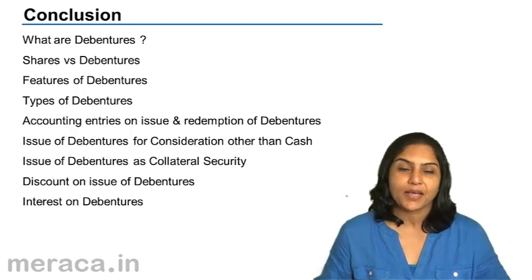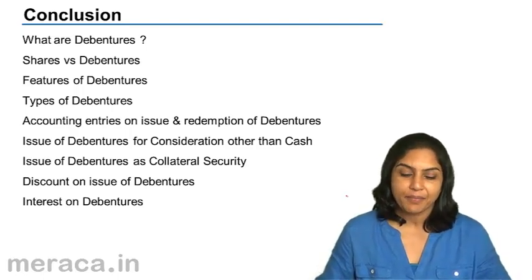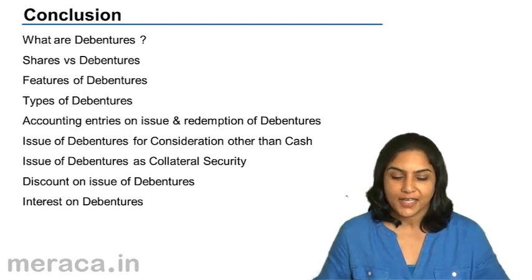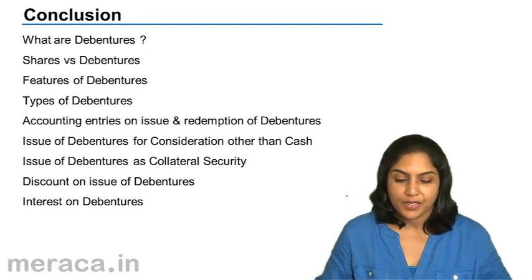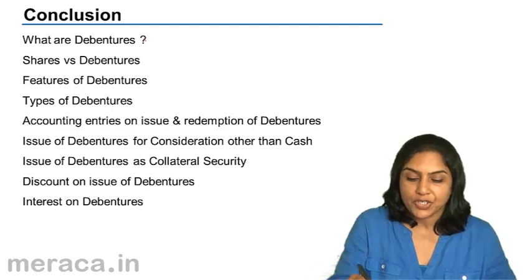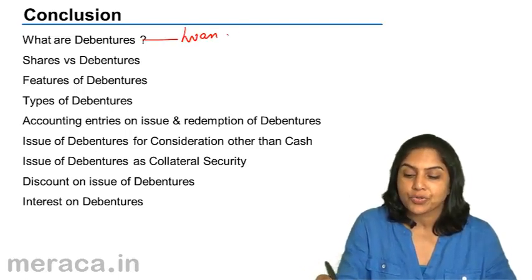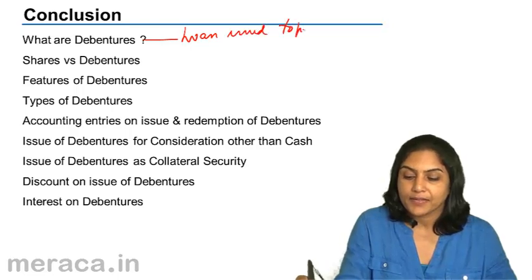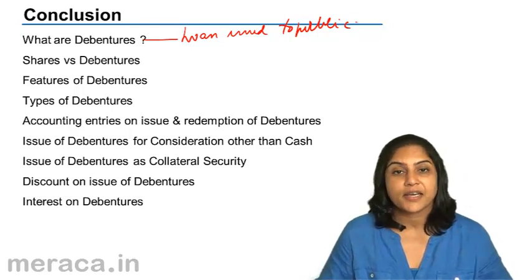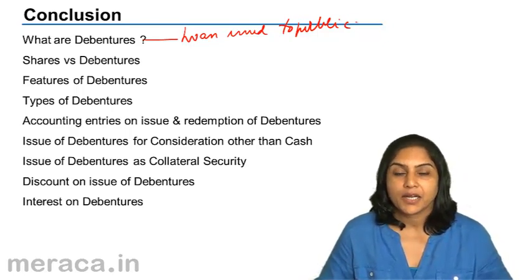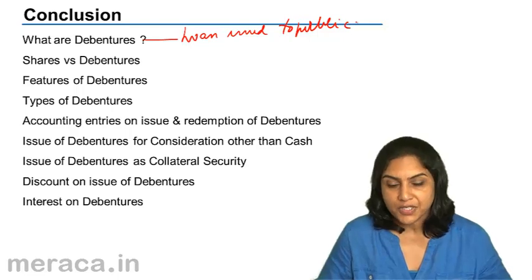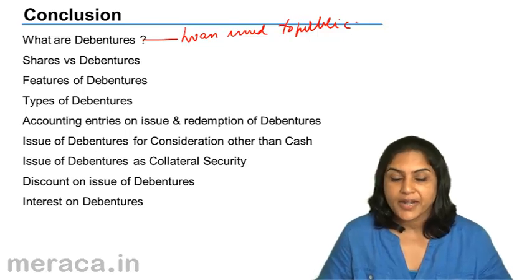Let us do a quick recap of all that we covered in this session. We first discussed what are debentures. Debentures are loans issued to the public. They carry a fixed rate of interest. They are redeemable. Interest is a charge against profits, and debenture holders are lenders of the company.